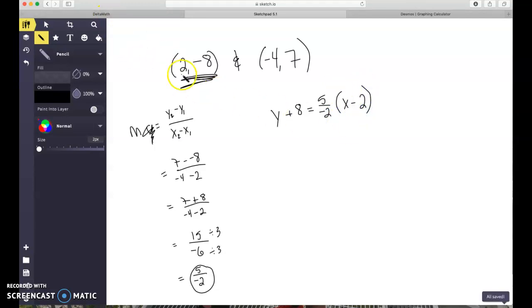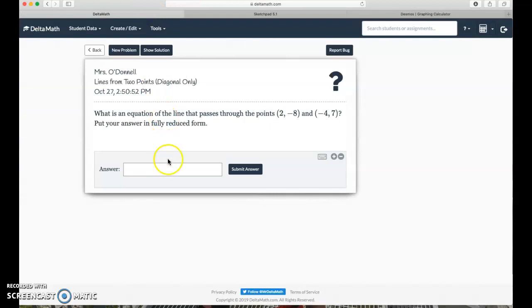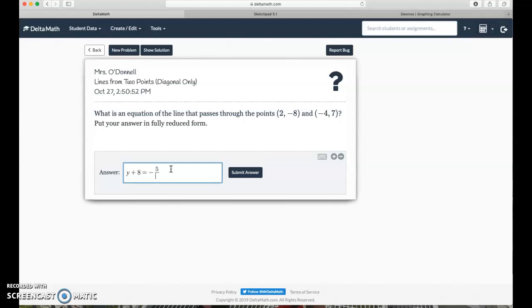Let's see if delta math will take it. You could have also written it using the other point, y minus 7 equals 5 over negative 2, x plus 4. Let's see if delta math will take this form. It does say completely simplified. So they may not consider this completely simplified.